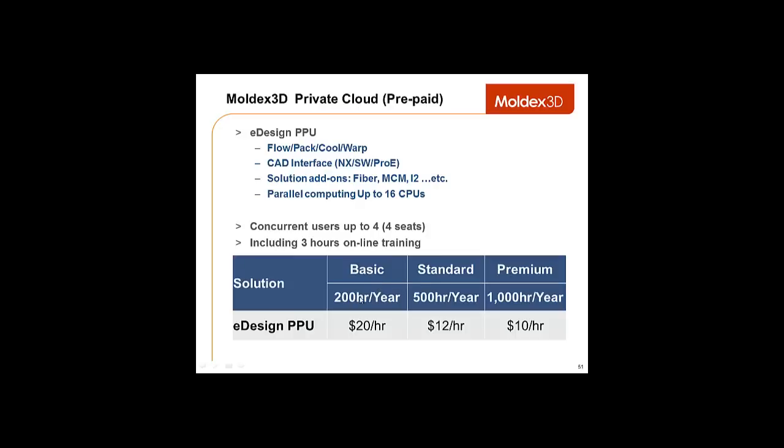So, you buy 200 hours a year, and that equates to about $20 an hour that you're spending. And remember, you're only paying for your usage. And you can also buy our standard pack, which is 500 hours per year. That equates to $12 per hour. Or the premium offers the best cost, only $10 an hour for 1,000 hours per year.